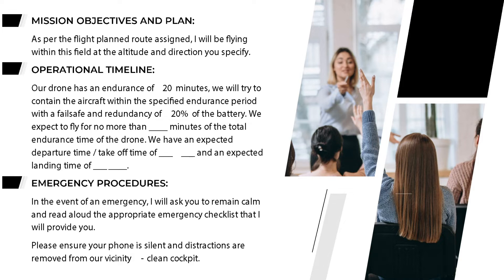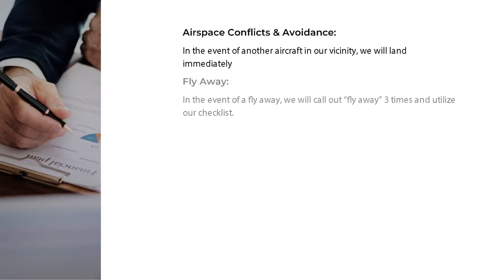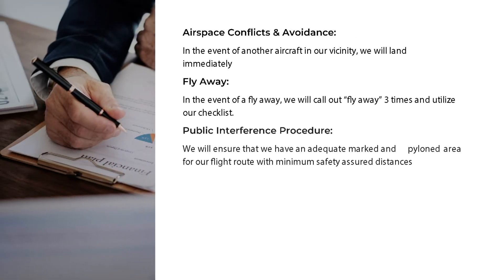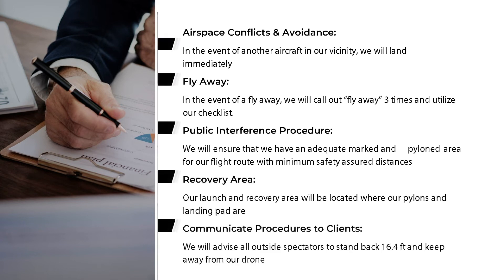Emergency procedures: in the event of an emergency, I will ask you to remain calm and read aloud the appropriate emergency checklist that I will provide you. Please ensure your phone is silent and distractions are removed from our area. Air space conflicts and avoidance: in the event of another aircraft in our vicinity, we will land immediately. Fly away: in the event of a fly away, we will call out 'fly away' three times and utilize our checklist.